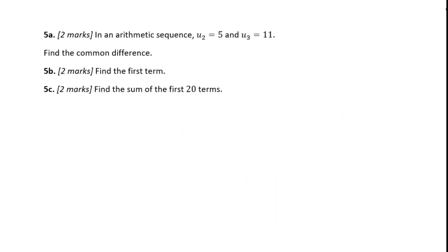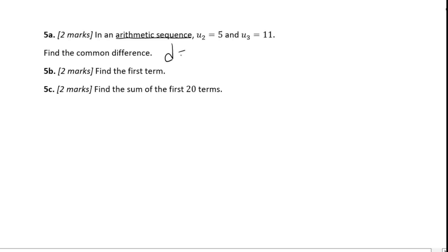Let's go to 5a. In an arithmetic sequence, U2 equals 5 and U3 equals 11. Find the common difference. The common difference d equals U_n minus the previous term, so d equals 11 minus 5 equals 6.